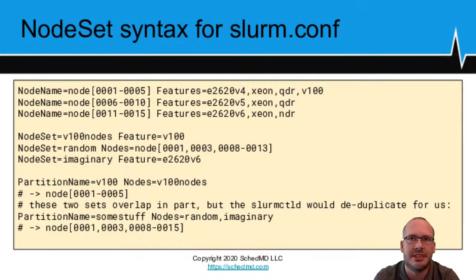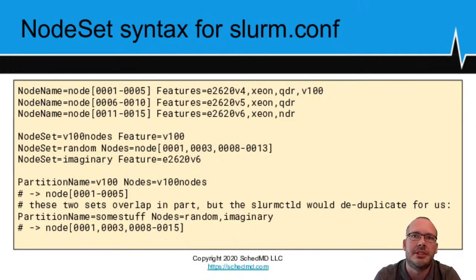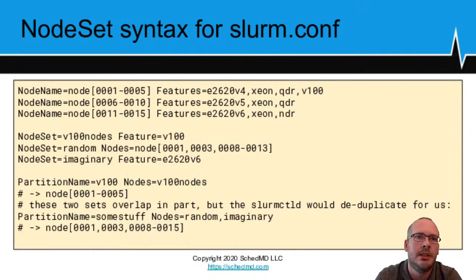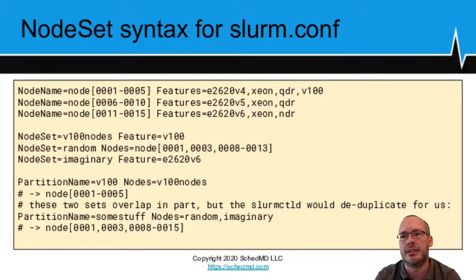As an example: we're defining three groups of nodes — nodes 1-5, 6-10, and 11-15 — each with slightly different features. 1-5 has QDR and a V100 card; 6-10 has a QDR card; 11-15 has a hypothetical NDR card. You can then define a node set called 'V100nodes' that will automatically be populated with every node that has a V100 feature defined, and use that name in your partition definitions to greatly simplify the configuration syntax.